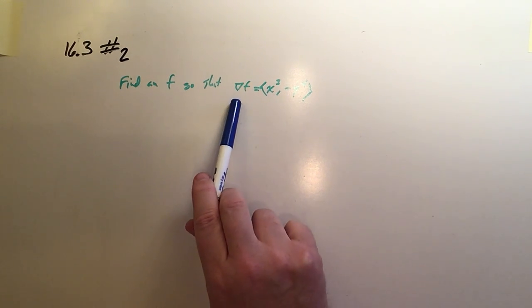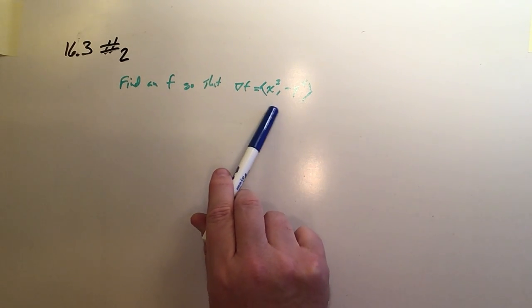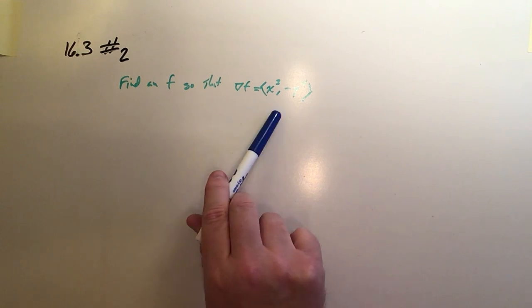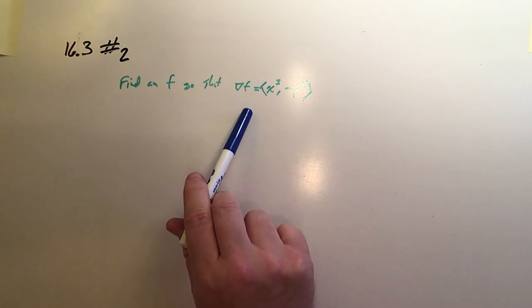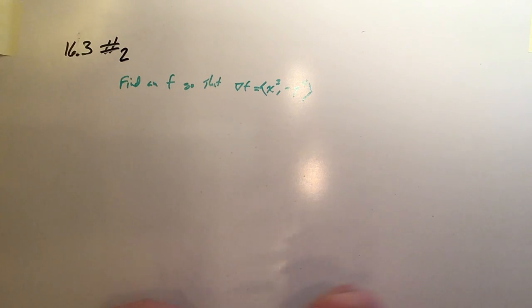We want to find an f so that this is the gradient of f. So the first thing we have to do is check whether f is conservative. That is, does an f even exist?